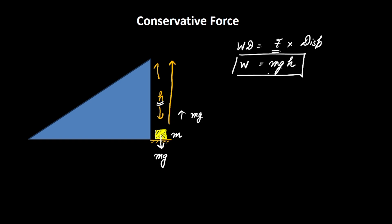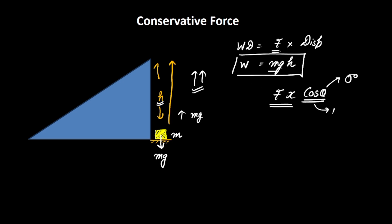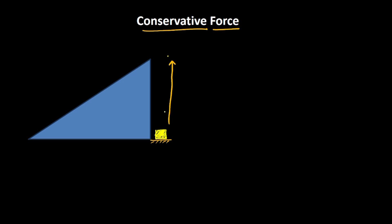The work done is equal to force into displacement into cos θ. In this situation, I am not worried about cos θ because the force and the displacement are happening in the same direction. So θ equals 0 degrees, and cos θ will become 1. So the work done is simply force times displacement, that is mg times H. The force involved here is the gravitational force, and I am doing the work done to take this particular box and overcoming the gravitational force.